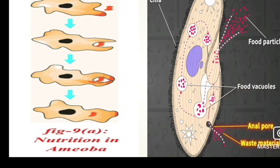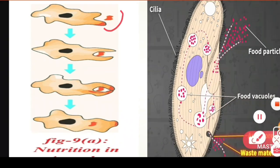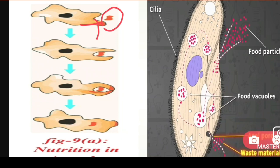Let us take an example of nutrition in amoeba. Amoeba is an unstructured organism with no particular shape. In the first stage, the amoeba is seen capturing food.